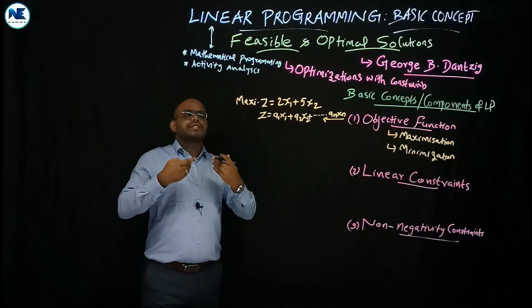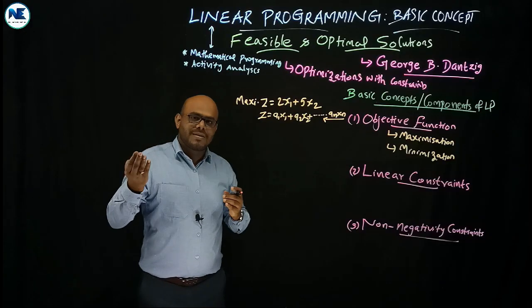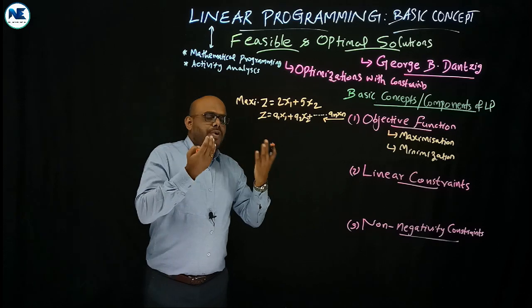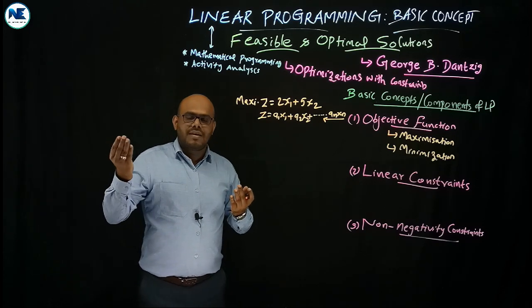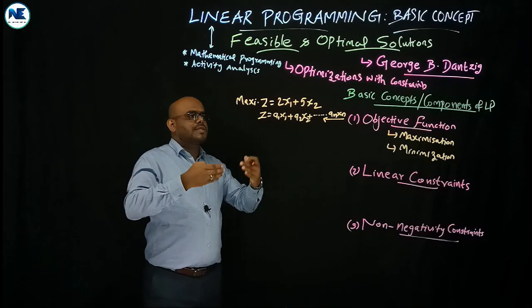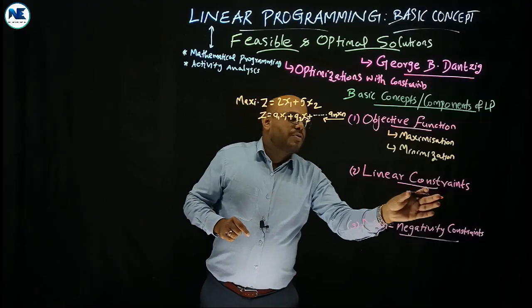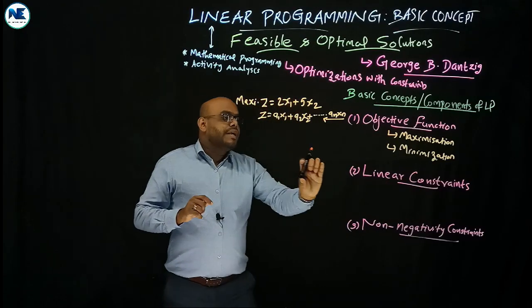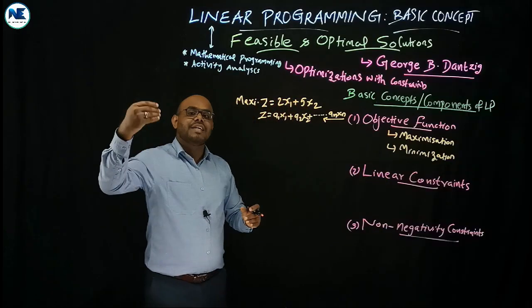These are linear constraints, expressed as linear inequalities. To understand this concept, take a simple example. Suppose production of x1 requires 5 man-hours and production of x2 requires 3 man-hours. There is a constraint: the total availability of man-hours is 500. We need to maximize an objective function subject to this constraint.